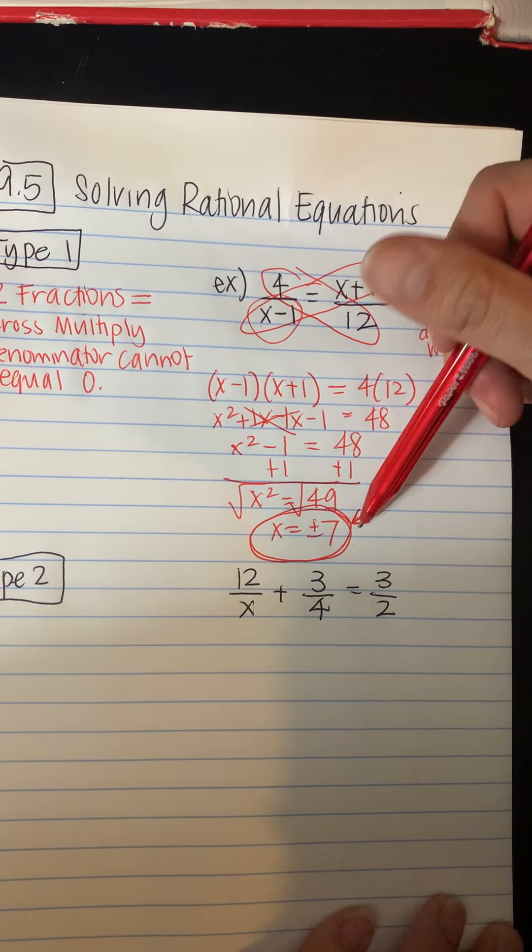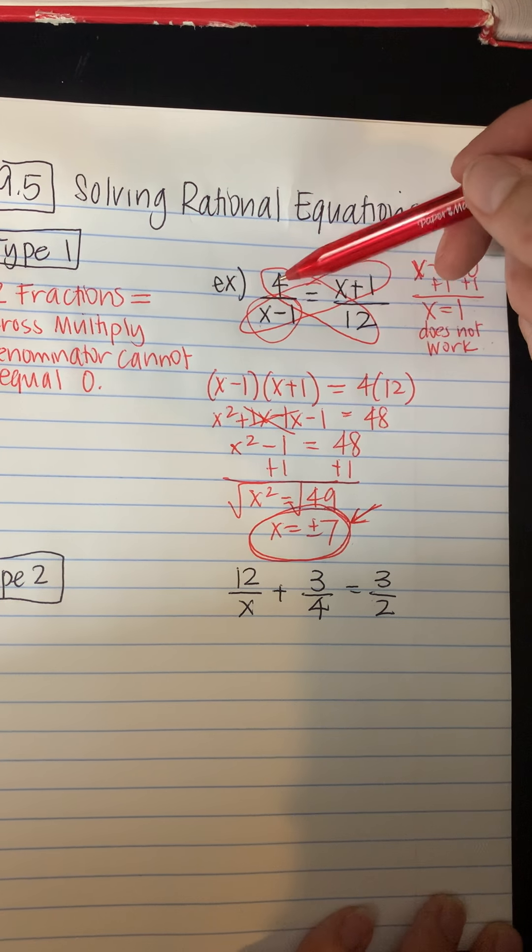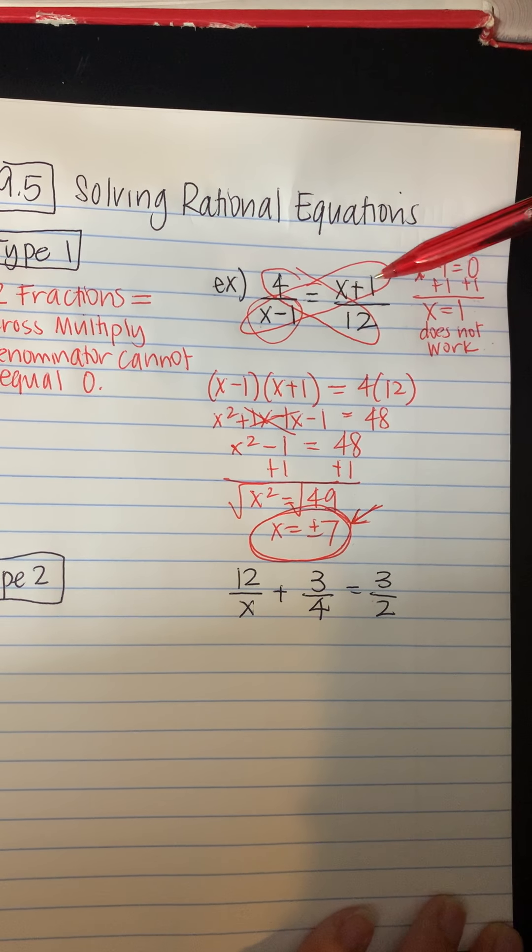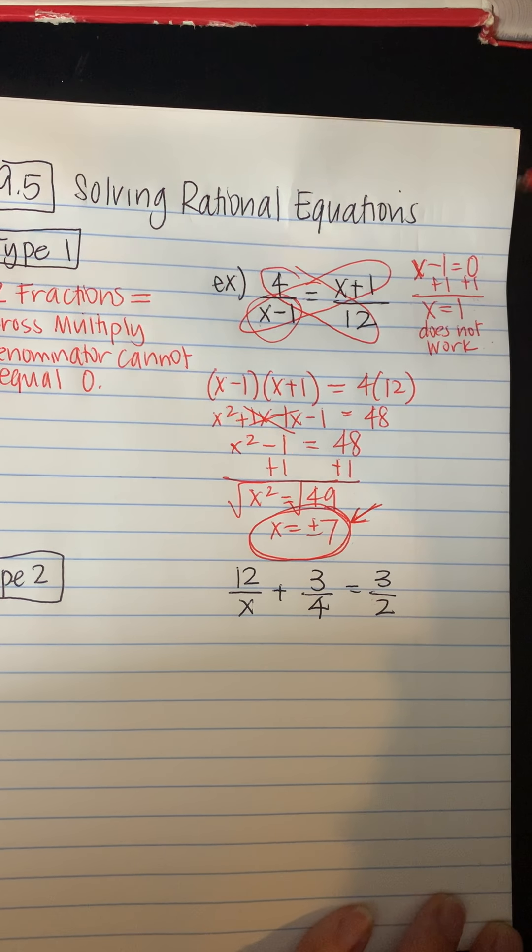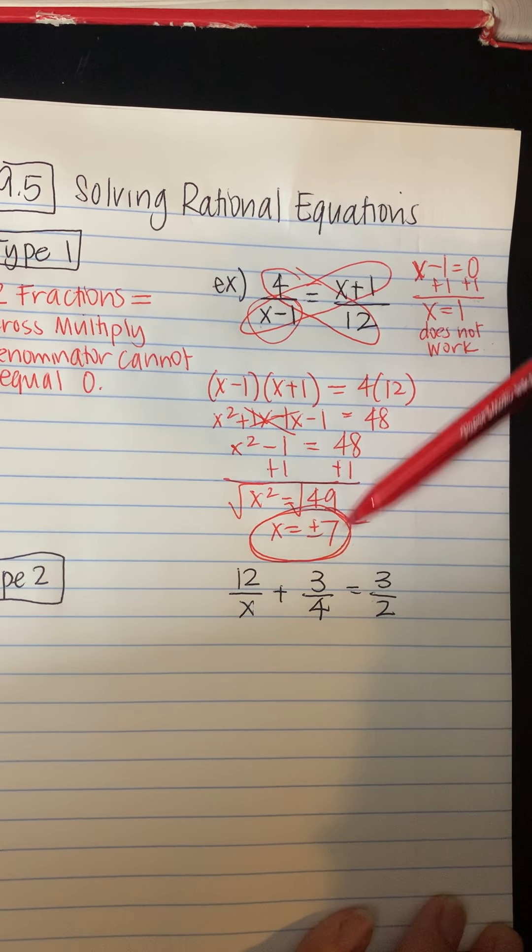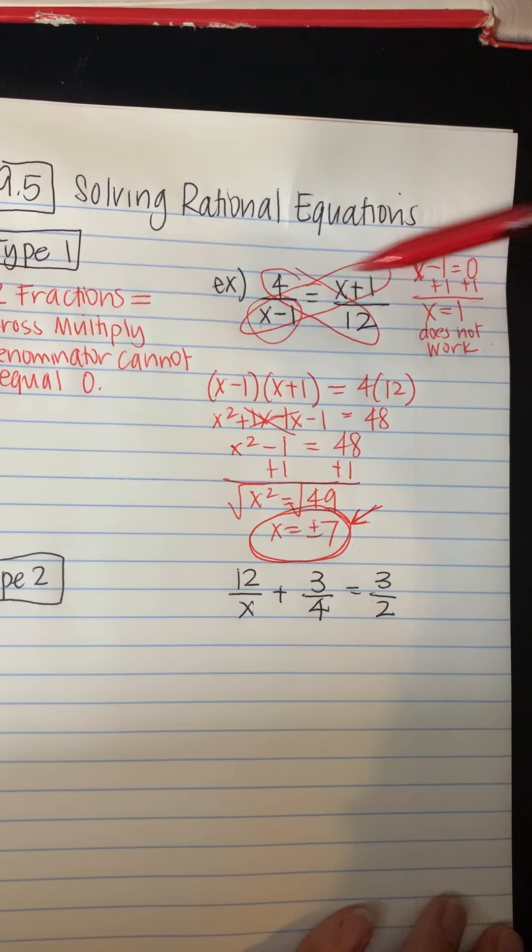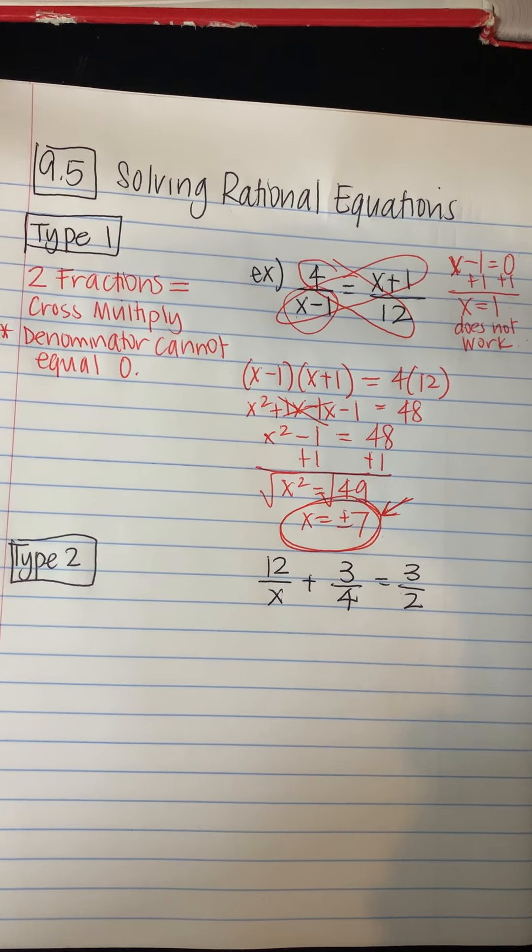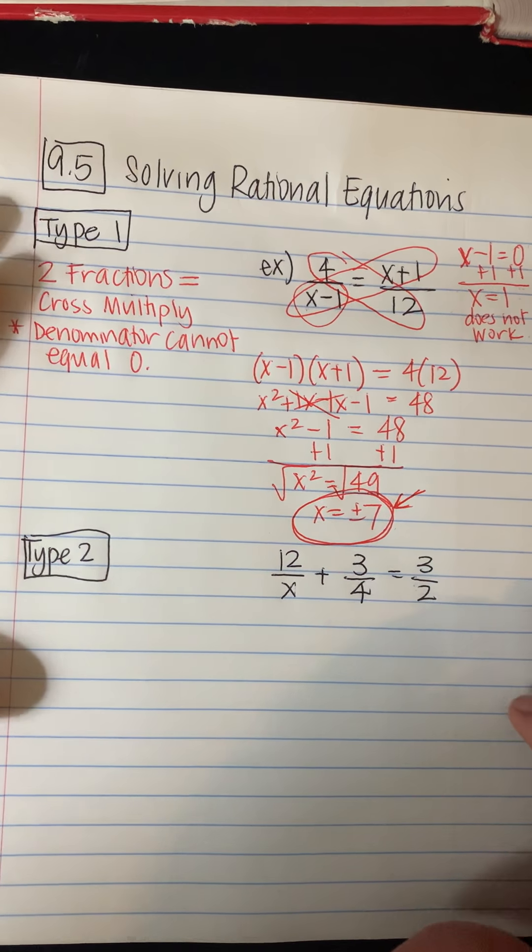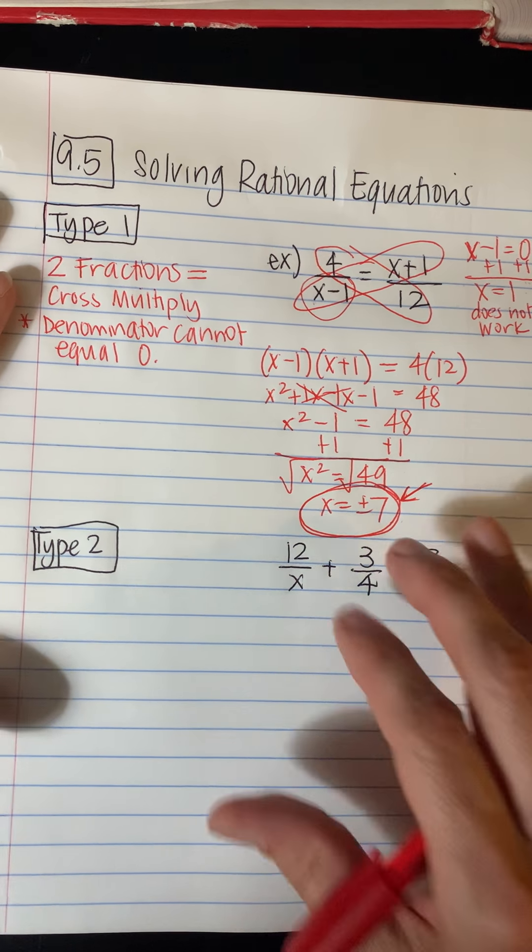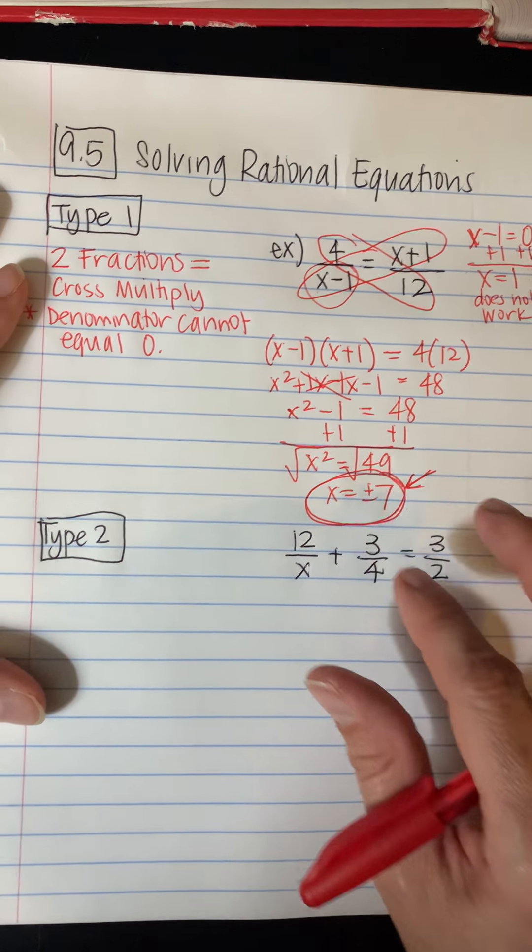So if you put those in, they would equal the same as what you would get down here. So 4 over 7 minus 1 and then 7 plus 1 over 12 would equal the same thing. And same thing with negative 7. So we can solve using cross multiply if you have two fractions that are equal. So when those questions come out, you'll be glad to see those and hopefully they make sense to you and you do well with them. It might require some factoring or solving by square roots.